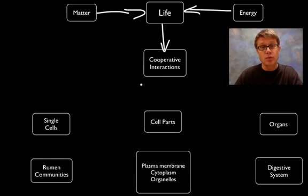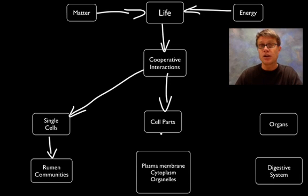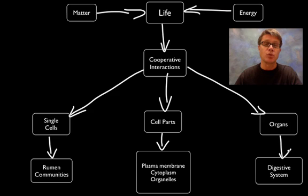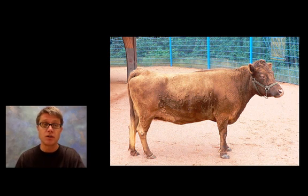I'm going to talk about this cooperation threefold. First, we'll talk about how single cells cooperate — all the cells that live in the rumen of a cow, for example. Then we'll talk about how cell parts cooperate, like how the plasma membrane works with the cytoplasm and other organelles. Finally, we'll finish with the larger level: how organs cooperate, using the digestive system as our example. Cooperation helps everybody who's involved.